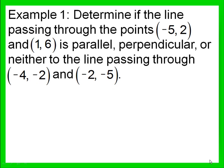First example: determine if the line passing through the points negative 5, 2 and 1, 6 is parallel, perpendicular, or neither to the line passing through the points negative 4, negative 2 and negative 2, negative 5. Remember our formula for slope: slope is y sub 2 minus y sub 1 over x sub 2 minus x sub 1.